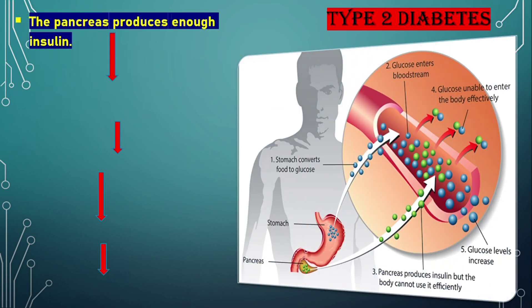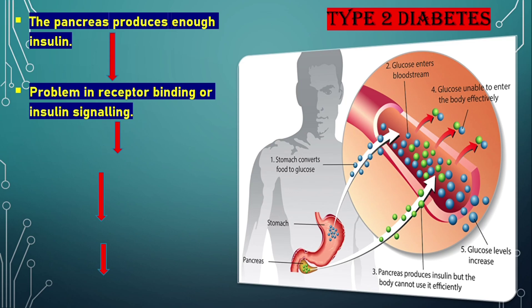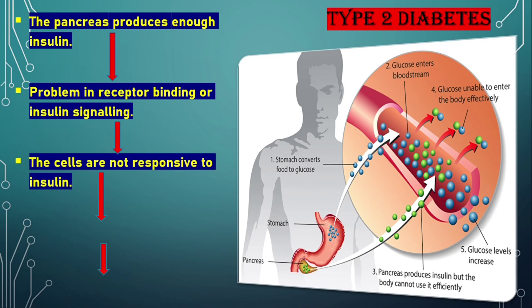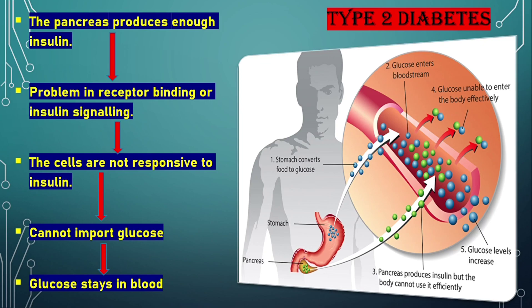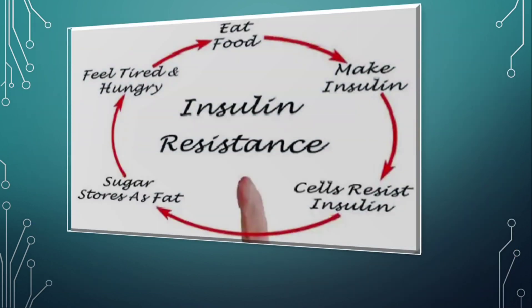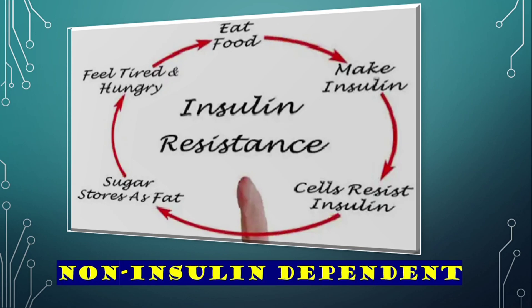In Type 2 diabetes, the pancreas produces enough insulin, but something goes wrong either with receptor binding or insulin signaling inside the target cells. The cells are not responsive to insulin and therefore cannot import glucose — glucose stays in the blood. In other words, Type 2 diabetics are insulin-resistant or non-insulin-dependent.